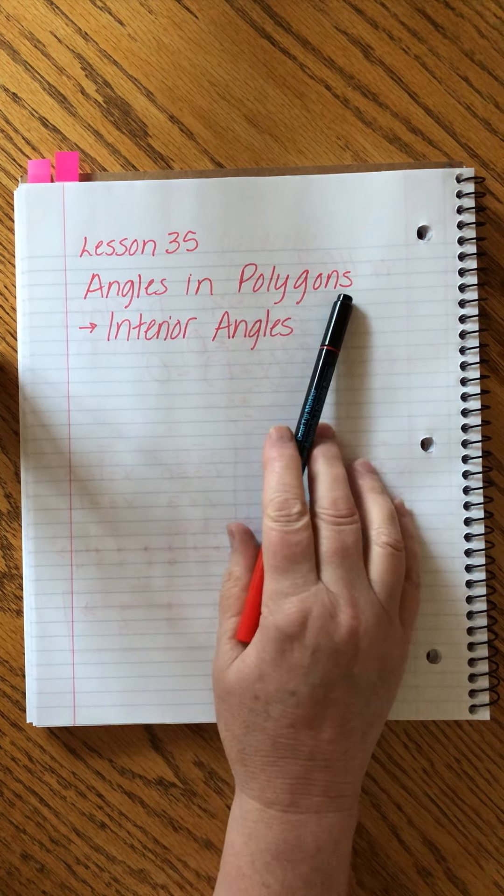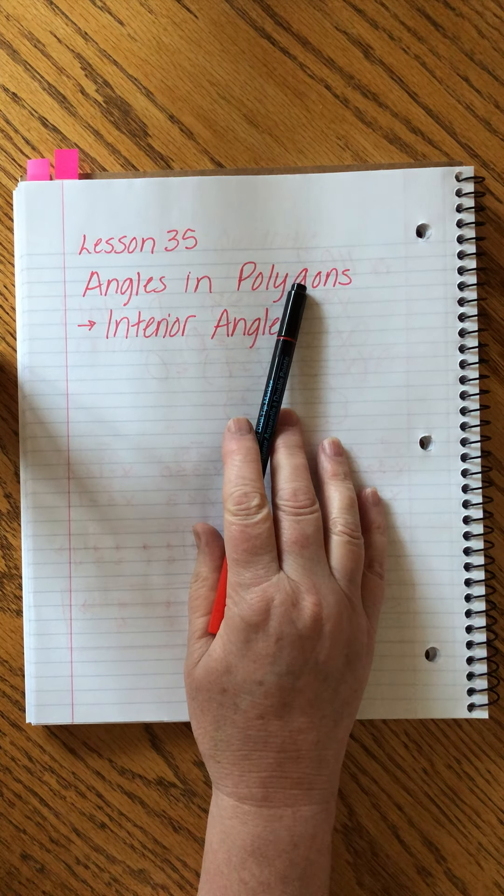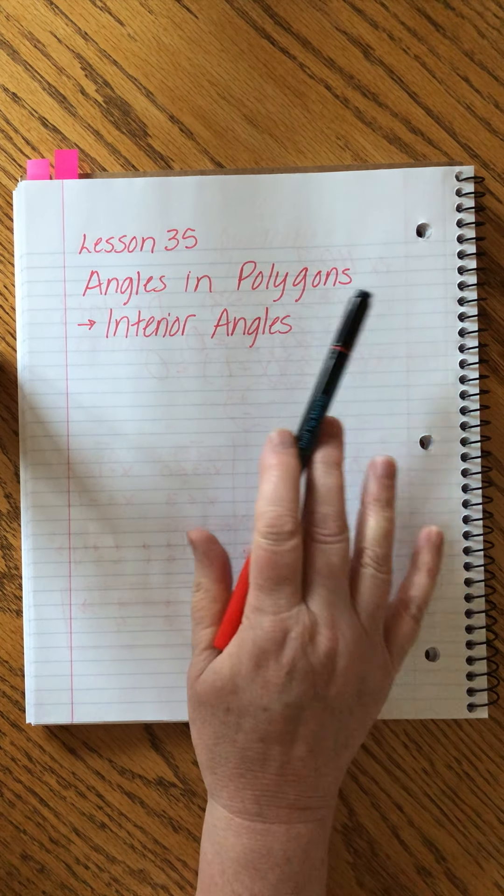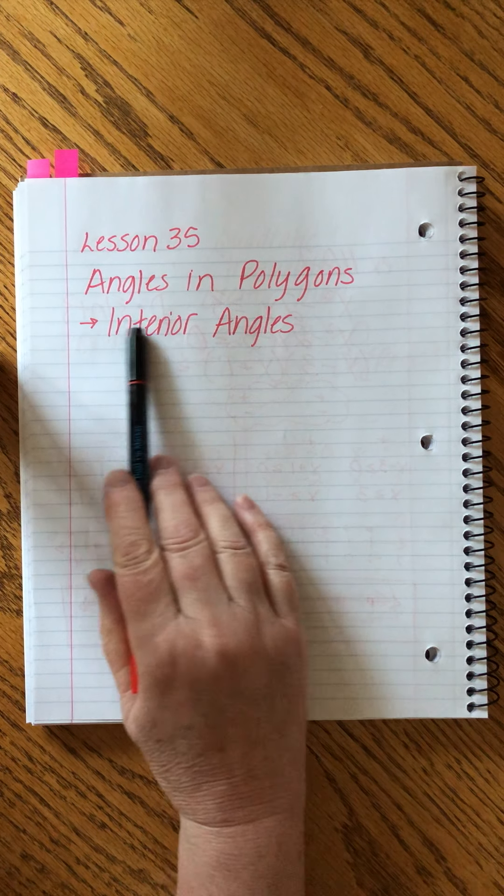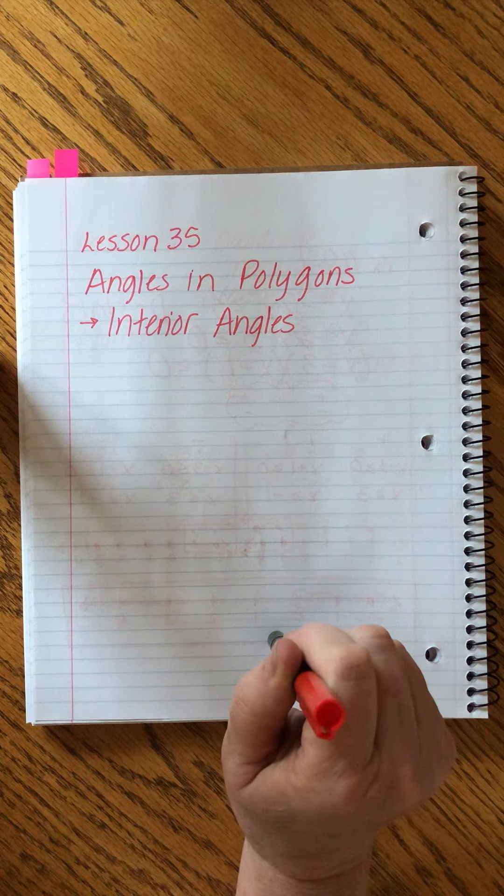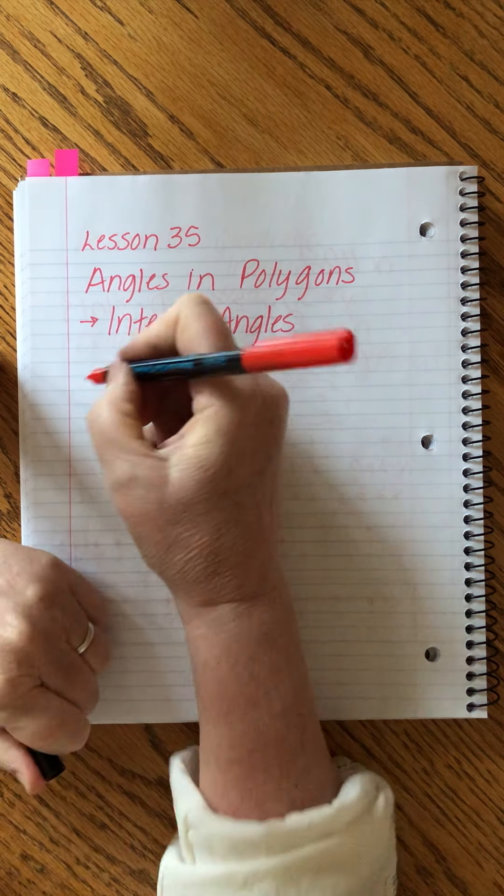First we want to talk about angles and polygons. Polygons are straight-sided closed objects, right? Triangle, squares, and on from there. They have interior angles and exterior angles. We're going to talk about the interior angles first and you're used to this.